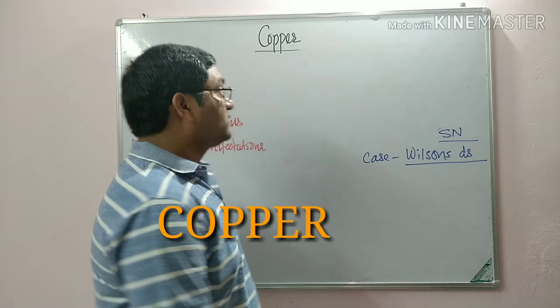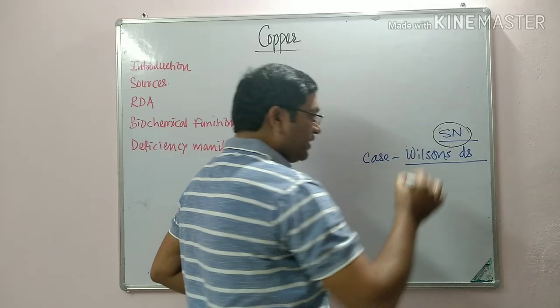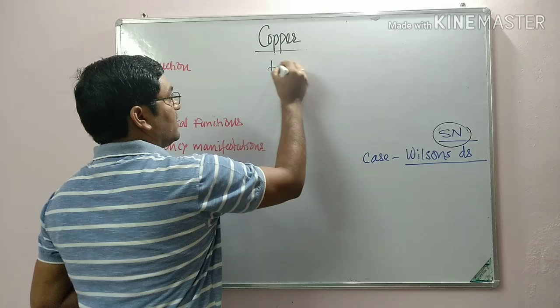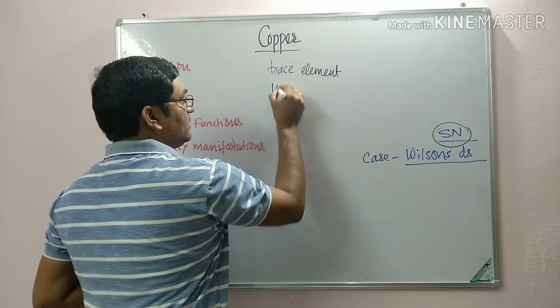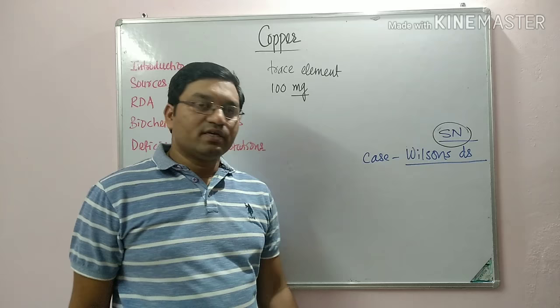Good morning friends. Today's topic of discussion is copper. You may get a short note on this topic or a case on Wilson's disease. Copper is a trace element, and the total body content is 100 milligrams. It is widely distributed in various organs in the body.